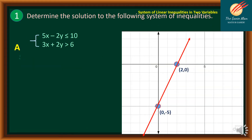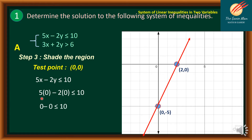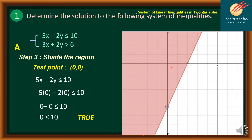For step number 3, we shade the region. Using the test point (0, 0) in 5x minus 2y ≤ 10: substituting gives 5(0) minus 2(0) = 0, which is less than or equal to 10. This is true, so we shade the region containing (0, 0).